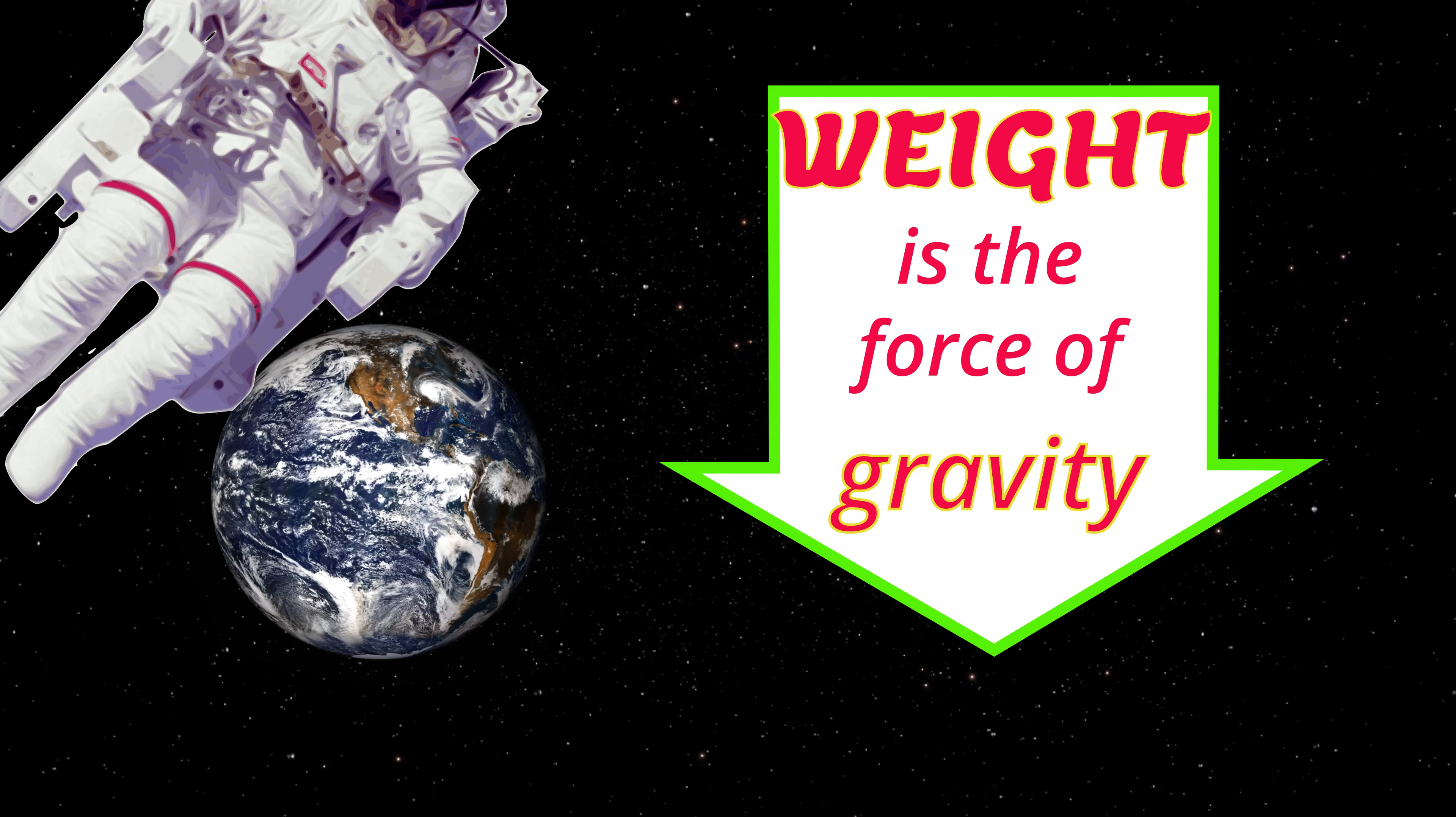On Earth, a person falling from space, or even out of a tree, falls towards the surface of the Earth with an acceleration of 9.8 metres per second squared. That means that for every second she falls, her speed will increase by 9.8 metres per second every second.